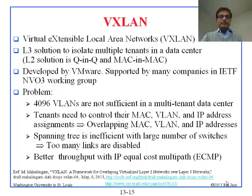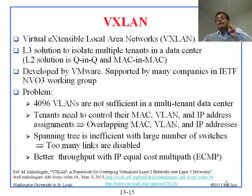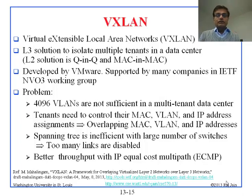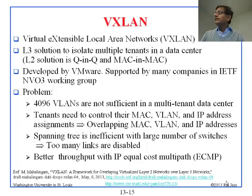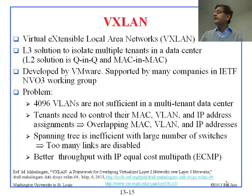The problem that VXLAN solves is that 4096 VLANs are not sufficient in a multi-tenant data center. Each tenant might have their own VLANs, just like we had in Q-in-Q. So 4096 cannot be divided very well. On top of that, there is a lot of overlap in the MAC addresses, VLAN addresses, and IP addresses of the tenants. This was the same problem that NVO3 is solving — VXLAN is one member of that same group.